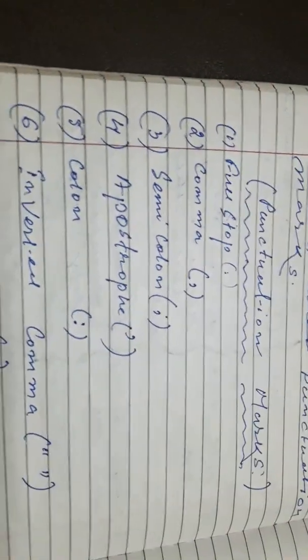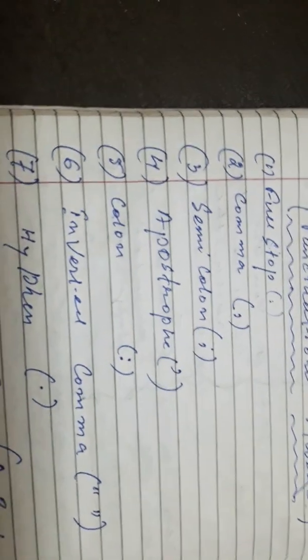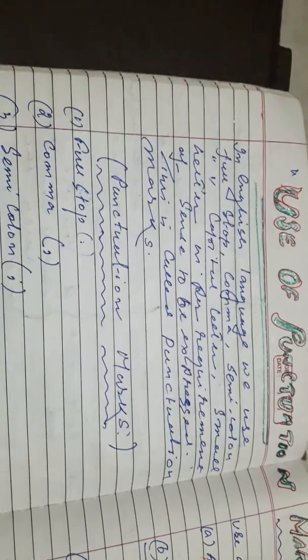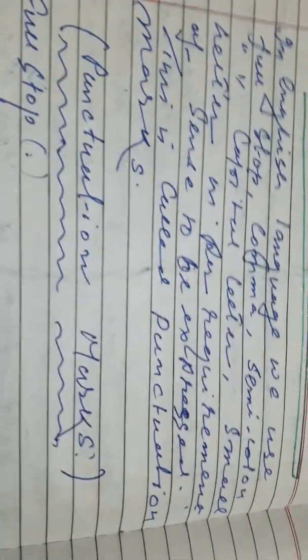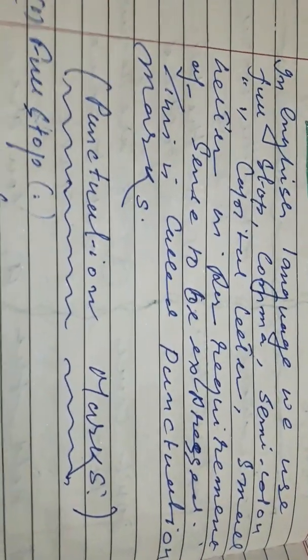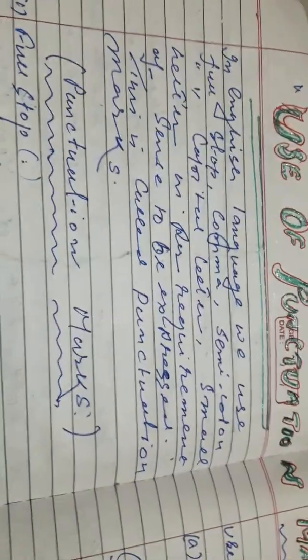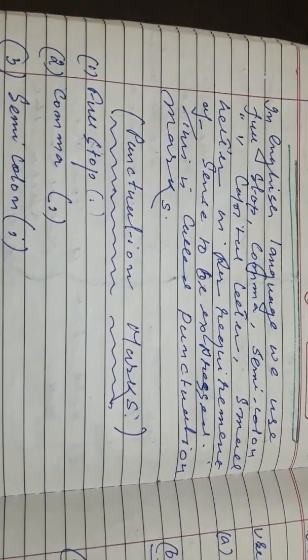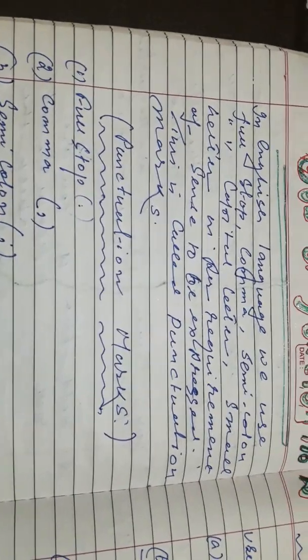So again, looking at all the punctuation marks: full stop, comma, semicolon, apostrophe, colon, inverted comma, hyphen, and capital letters. These are used to express the sense of a sentence clearly. This is all for the punctuation class. We will come again and discuss more in another class. Thank you.